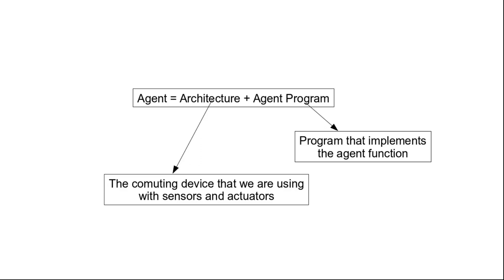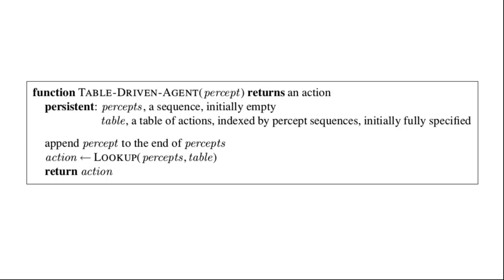The agent function tells us what action needs to be performed by the agent in response to the current percept sequence. There are different ways to build the agent program, and in today's class we will talk about the table-driven agent. Here is the pseudocode for the table-driven agent.